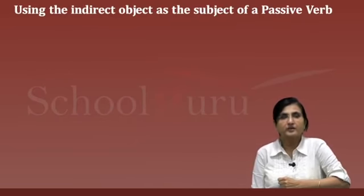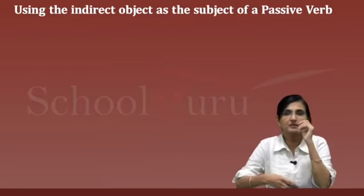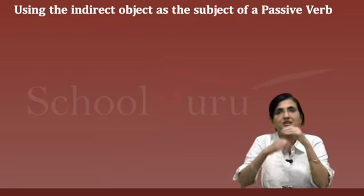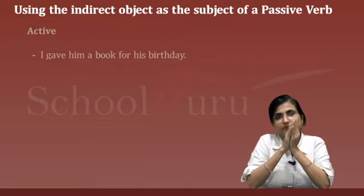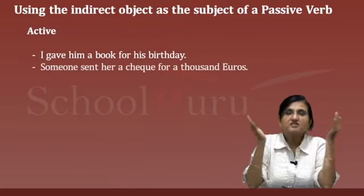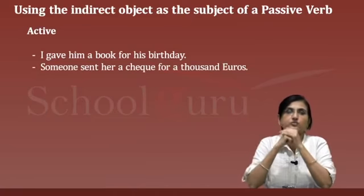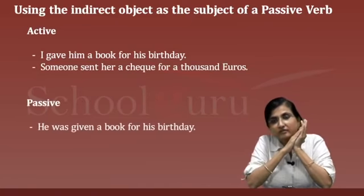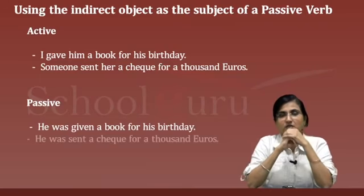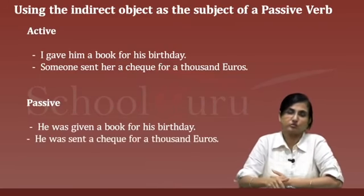We can use the indirect object as the subject of a passive verb. Active: 'I gave him a book for his birthday.' 'Someone sent her a check for a thousand euros.' Passive: 'He was given a book for his birthday.' 'He was sent a check for a thousand euros.'